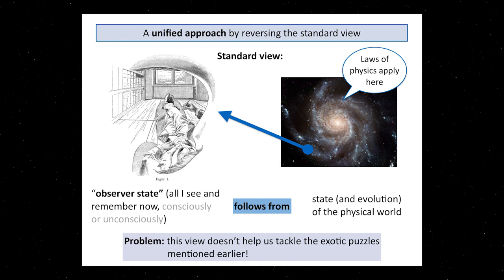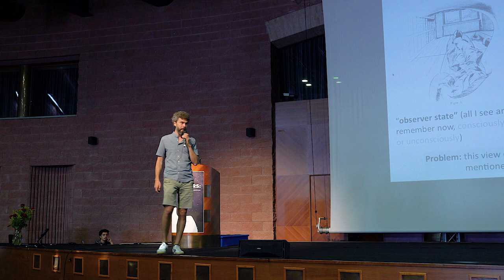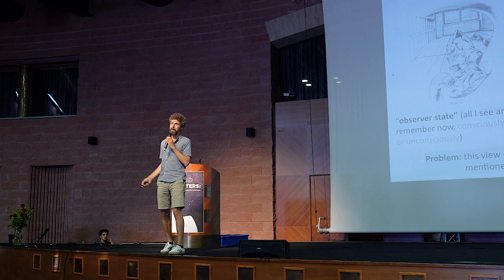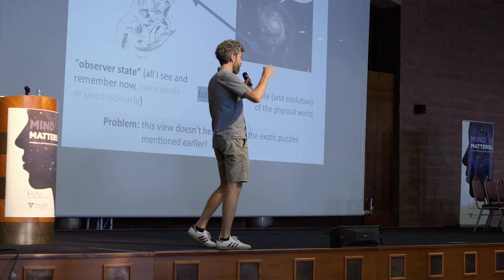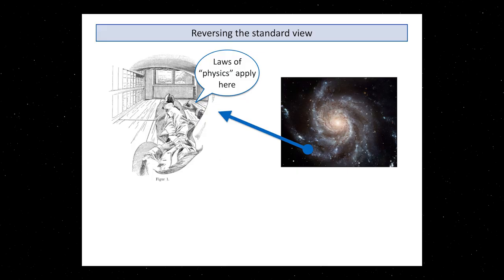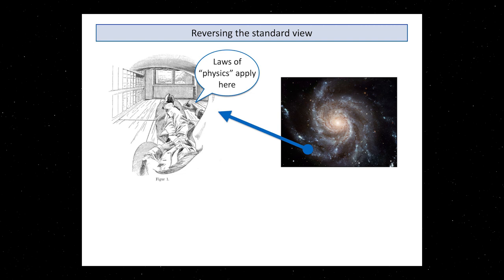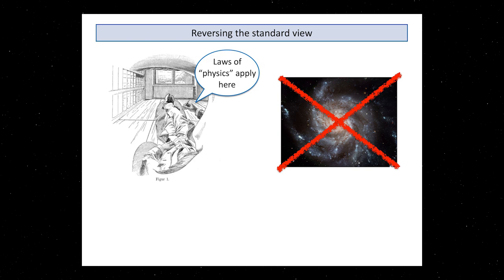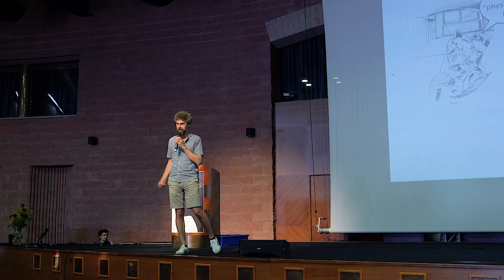This is the standard view, but the problem is this view sometimes doesn't really help us to solve these puzzles. For example, when you ask in Parfit's experiment, will I end up here or there, I don't think that any detailed physical knowledge of the mechanism of the transporter will be able to answer this question. So my suggestion is methodologically to do the following: Suppose that the laws of quote-unquote physics apply directly to the locally available information, like the observer state, and just get rid for the moment of the idea of a world. Just drop it for now.